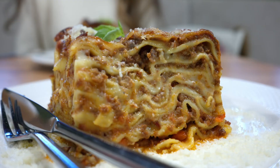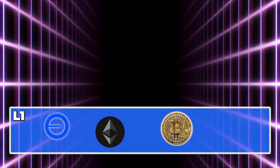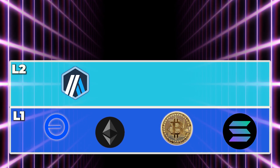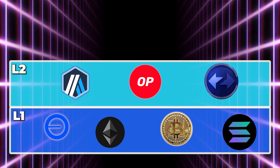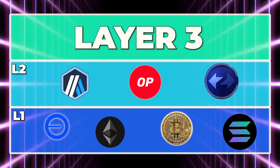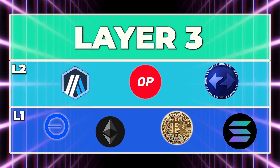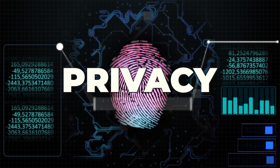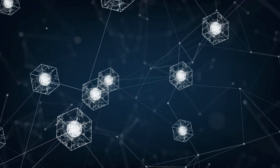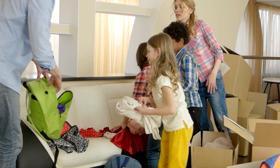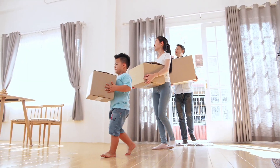What is a layer 3? Let's keep it simple. Blockchains are like layers of cake — or lasagna if you're hungry. Layer 1 is your base: Ethereum, Bitcoin, Solana. Layer 2 sits on top — Arbitrum, Optimism, zkSync — making things faster and cheaper. Layer 3 is the icing on the cake. It's built on top of layer 2s to handle specialized tasks like gaming, privacy, or super fast microtransactions. With L3s, projects get their own chain, custom built, scalable, and super efficient — like moving from a crowded apartment to your own penthouse suite.